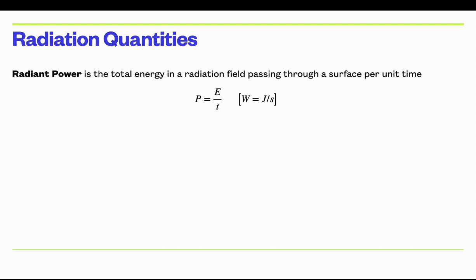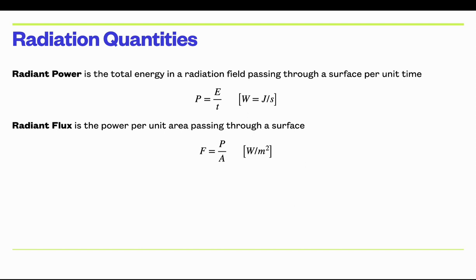Radiant power is the total energy in a radiation field passing through a surface per unit time, so it has units of energy per time, or watts. Radiant flux is that power per unit area. So if you imagine light from the sun striking a surface, the radiant power would be the total amount of energy per unit time striking the surface, and the flux is that power divided by the area of the surface.